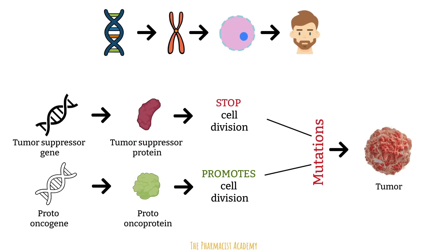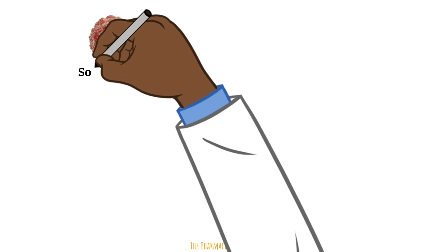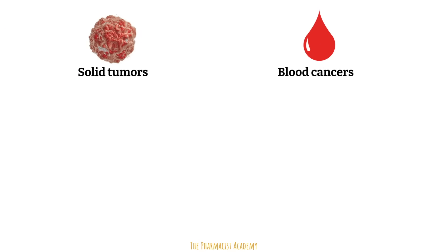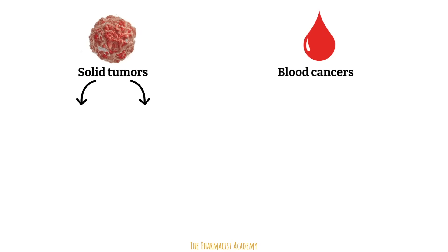If a tumor suppressor protein is mutated, an abnormal cell can divide uncontrollably with nothing there to stop it. If the proto-oncogene protein becomes mutated, it will be known as an oncogene. This can cause the cells to divide uncontrollably and possibly bypass restrictions from any tumor suppressor proteins. Cancer can occur in almost any part of the body, and we divide them into two main groups: solid tumors and blood cancers.